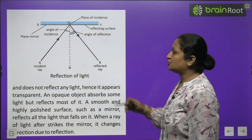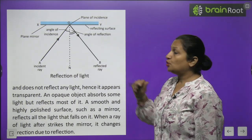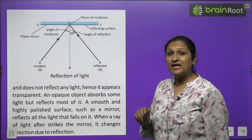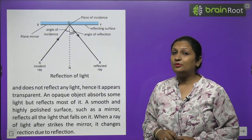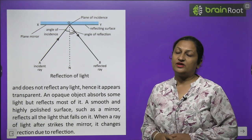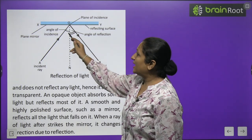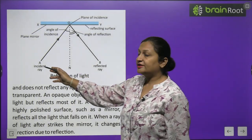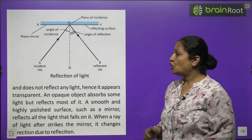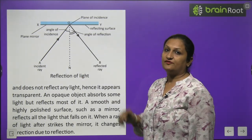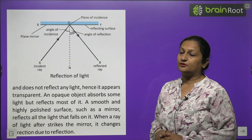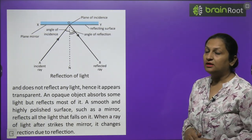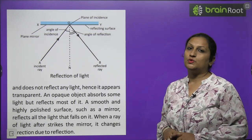The incident ray comes and strikes the polished surface, and from there it bounces back — this bouncing back in the same medium is called the reflected ray. The angle between the incident ray and the normal is the angle of incidence. The angle between the normal and the reflected ray is the angle of reflection. When we look at both, the angle of incidence is equal to the angle of reflection — that is, angle of incidence equals angle of reflection.